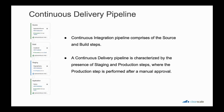After the continuous integration pipeline has been implemented and supporting processes established, we can start transitioning toward the continuous delivery pipeline. This transition requires teams to automate both building and deploying applications. The continuous delivery pipeline is characterized by the presence of staging and production steps, where the production step is performed after a manual approval. We can gradually build a continuous delivery pipeline by writing deployment scripts. Depending on the needs of the application, some deployment steps can be abstracted by existing AWS services — for example, CodePipeline directly integrates with CodeDeploy, a service that automates code deployments to Amazon EC2 instances and even instances running on premises.